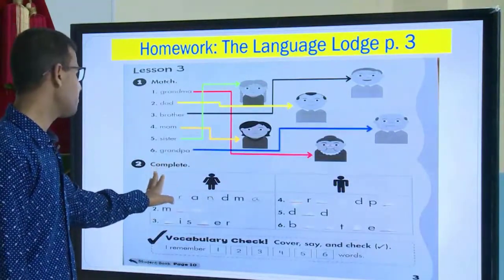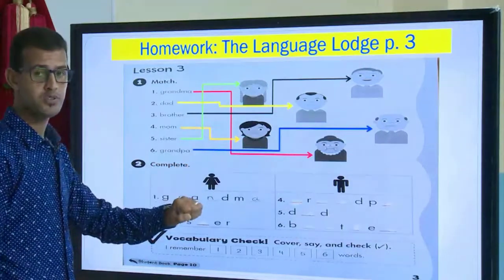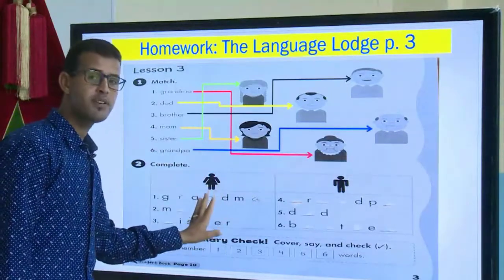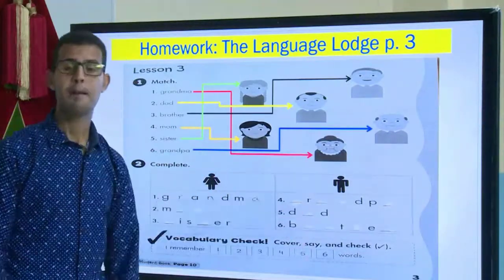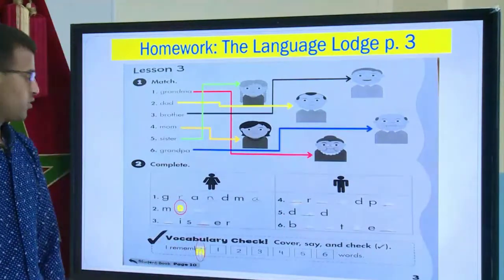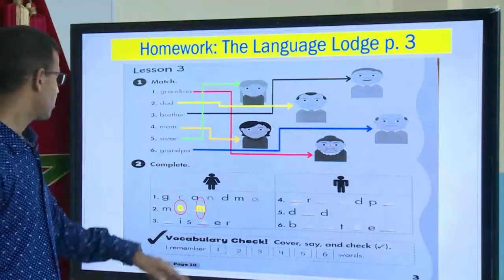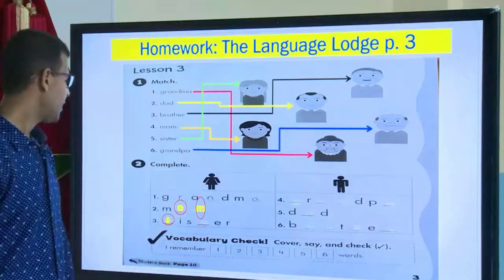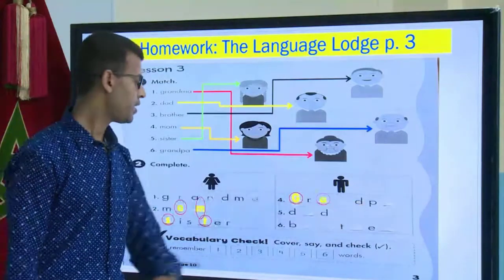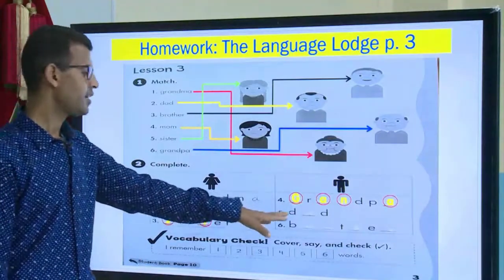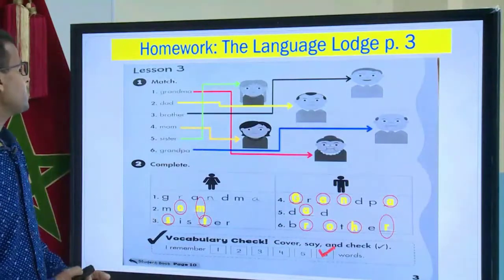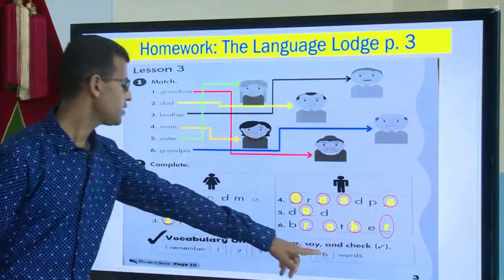Let us move to exercise number three. You are going to complete the words. In this chart we have two categories: female family members and male family members. The first word is done for you — grandma. The second one is mom. The third one is sister — S-I-S-T-E-R. The next one is grandpa. Number five is dad, and number six is brother.